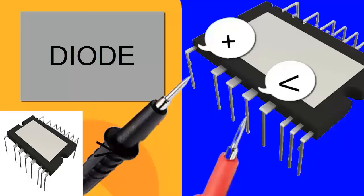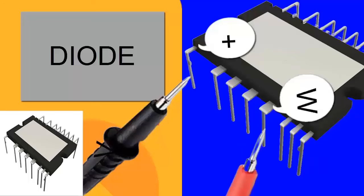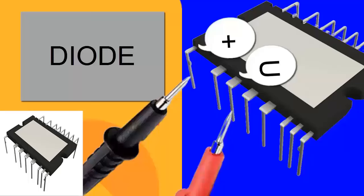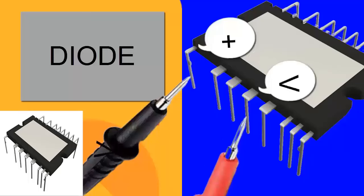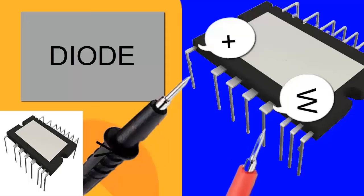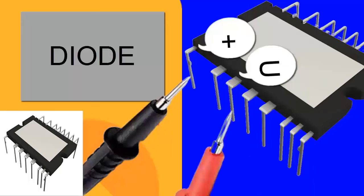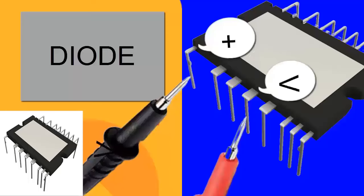Now, using the identified IPM terminals, place the black probe of the multimeter on the positive pin of the IPM. Then place the red probe on the U, V, and W terminals sequentially. The readings should be consistent, with similar values across all three terminals U, V, and W. Any significant variation could indicate a problem with the IPM module.